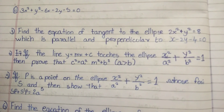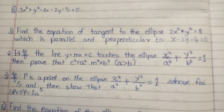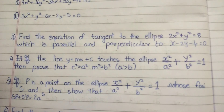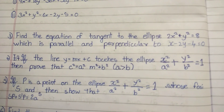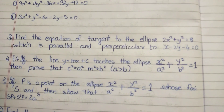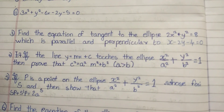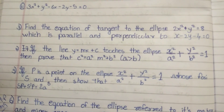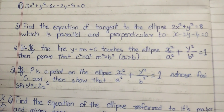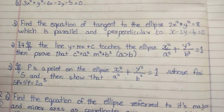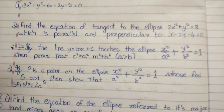Next: if P is a point on the ellipse, whose foci are S and S', then show that SP + S'P = 2a. Okay, this is the theorem.